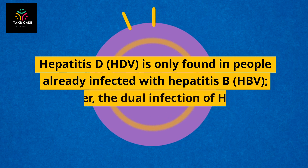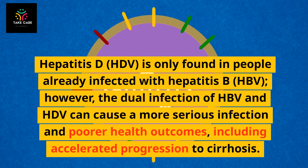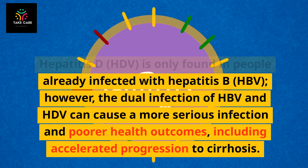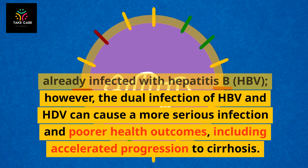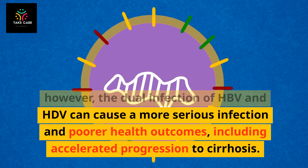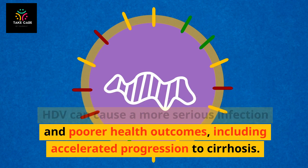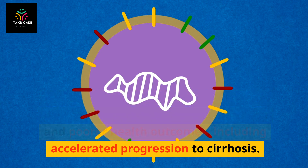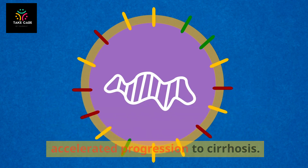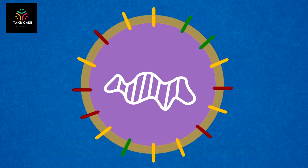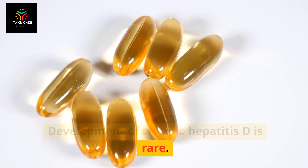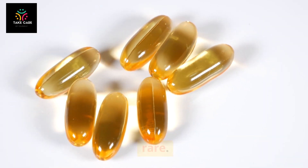Hepatitis D, HDV, is only found in people already infected with hepatitis B, HBV. However, the dual infection of HBV and HDV can cause a more serious infection and poorer health outcomes, including accelerated progression to cirrhosis. Development of chronic hepatitis D is rare.